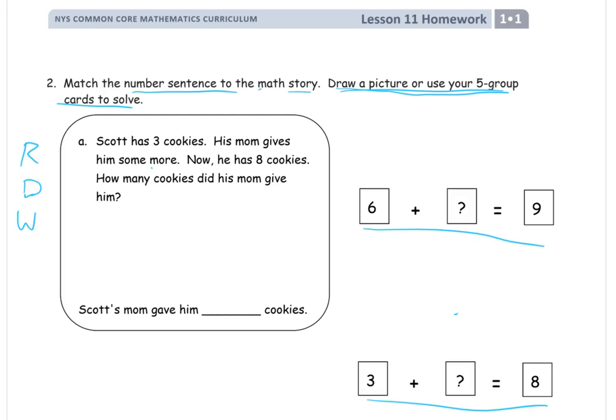Scott has three cookies. His mom gives him some more and now he has eight. How many cookies did his mom give him? So, I'm going to draw a picture here. If you have your five group cards, you can use them to figure this out. But you really should draw this picture too. So, Scott starts out with three cookies. And his mom gives him some more. You don't know how many more. But then at the end he has eight.